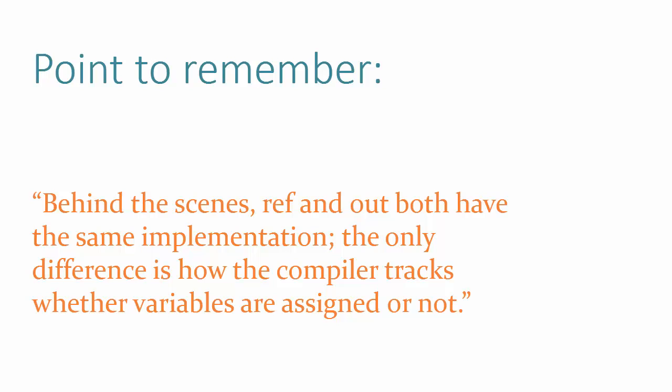To summarize: we use ref and out parameters when we need to return values back to the caller function. Ref is used when we want to alter the value of a passed parameter, while out is used when we want the method to return something to us.